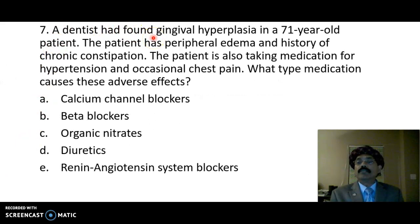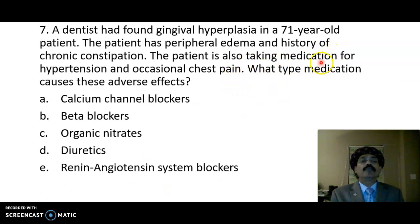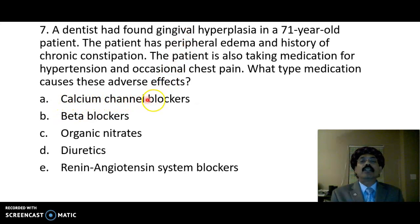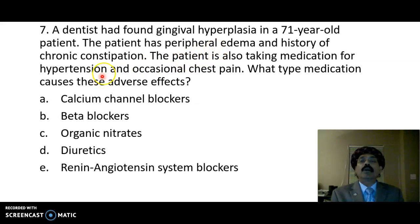Question 7: a dentist found gingival hyperplasia in a 71-year-old patient who has peripheral edema and a history of chronic constipation. The patient is also taking medication for hypertension and occasional chest pain. Gingival hyperplasia is caused by a calcium channel blocker, which is the drug of choice for hypertension plus angina, including Prinzmetal angina. It causes peripheral edema and constipation.